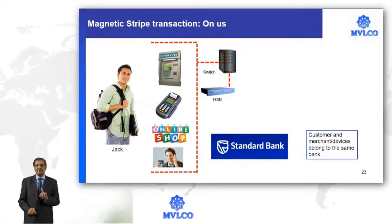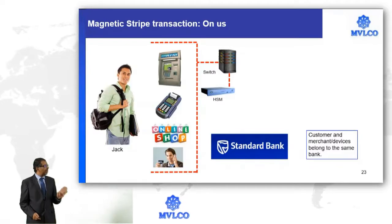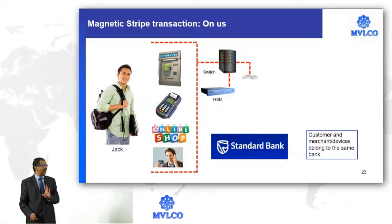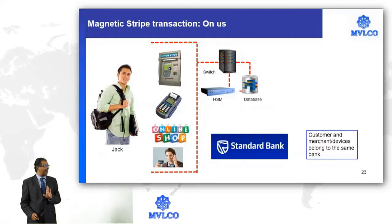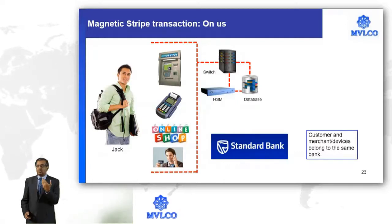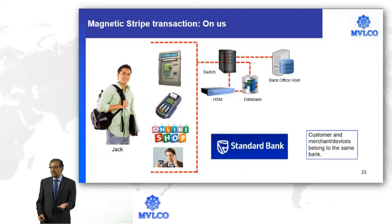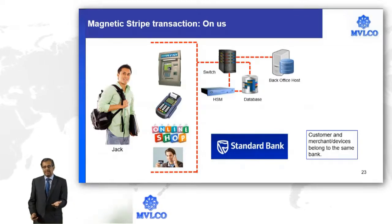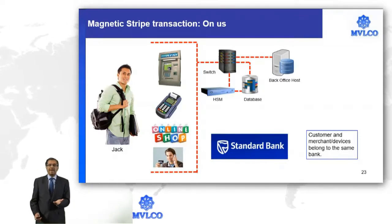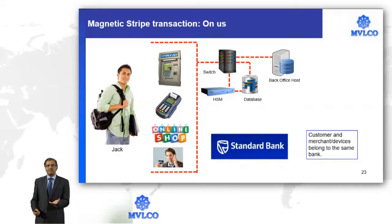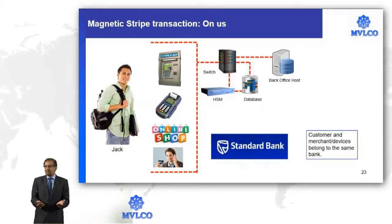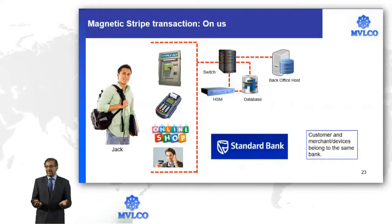At the switch, we will have the information about the cardholder. Assuming this to be a debit or credit card, we will have a back office. At the back office, we ask: does this cardholder have adequate balance in his account? If the answer is yes, the back office gives the feedback to the switch. The switch will then issue an authorization to the terminal like the ATM or the POS machine.